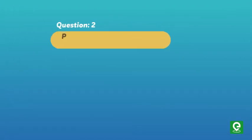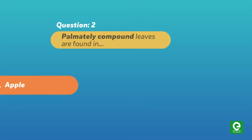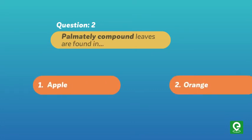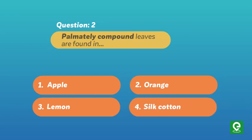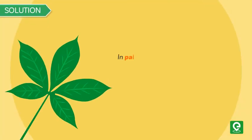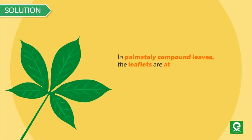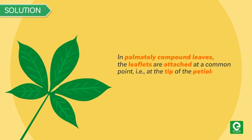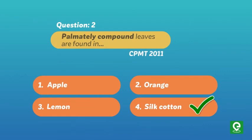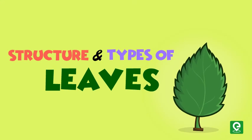Question two: Palmately compound leaves are found in — (1) apple, (2) orange, (3) lemon, (4) silk cotton. This question was asked in CPMT 2011. Solution: In palmately compound leaves, the leaflets are attached at a common point — at the tip of the petiole — as in silk cotton. Hence option four is correct.